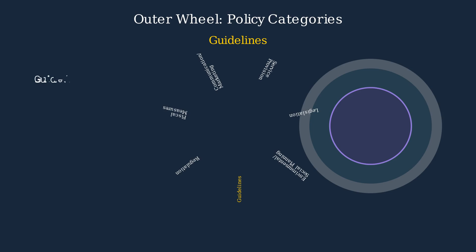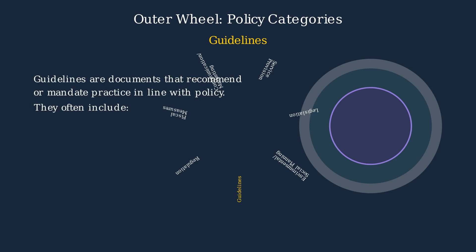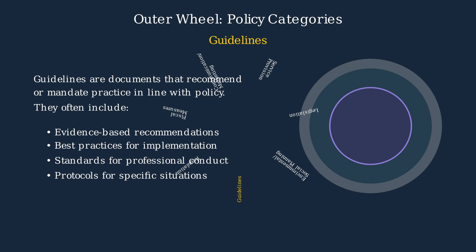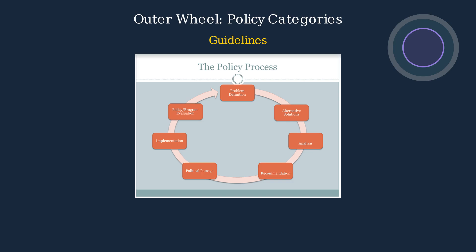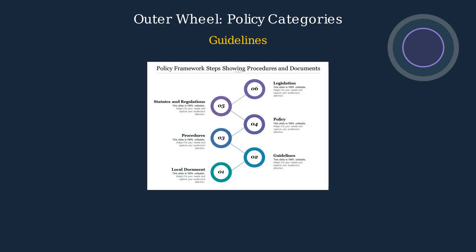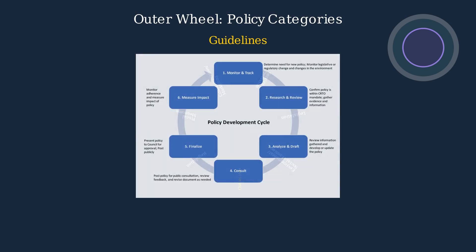Guidelines are documents that recommend or mandate practices in line with policy objectives. They translate policy intentions into practical actions, and typically include evidence-based recommendations, best practices for implementation, standards for professional conduct, and protocols for specific situations. The policy process begins with identifying a problem and moves through stages including developing alternative solutions, analysis, and recommendations. Guidelines fit within a broader policy framework, starting from local documents up to formal legislation. Developing effective guidelines involves a cyclical process of monitoring, research, drafting, consultation, finalization, and impact assessment.